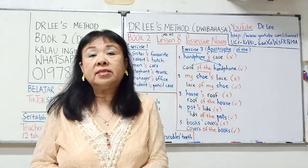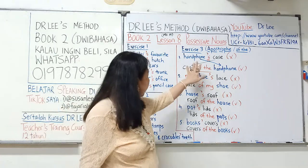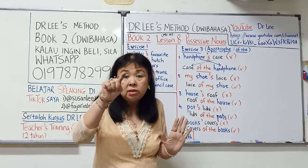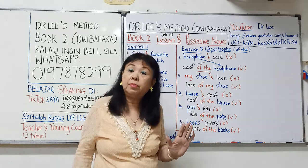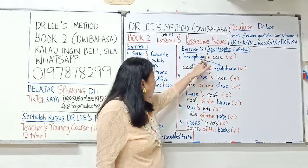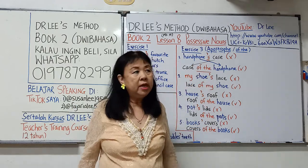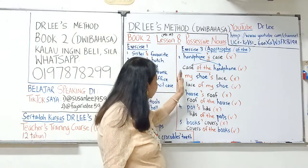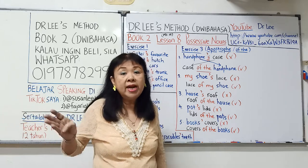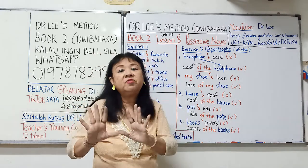Contoh: 'This is the handphone's case' — boleh atau tidak? Tidak boleh, sebab handphone itu tidak bernyawa. Maka kita pindahkan 'case' ke depan, apostrophe S diganti dengan 'of the', dan handphone di belakang. Jawapan yang betul: 'This is the case of the handphone.'